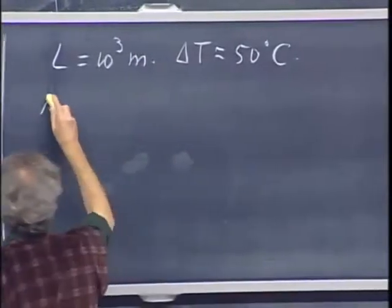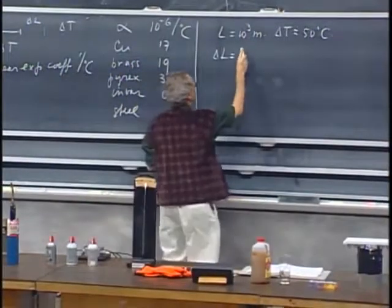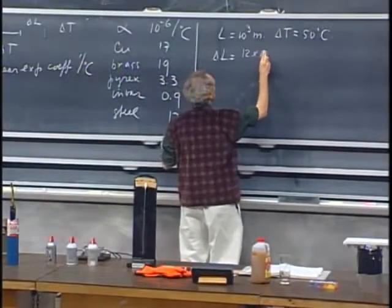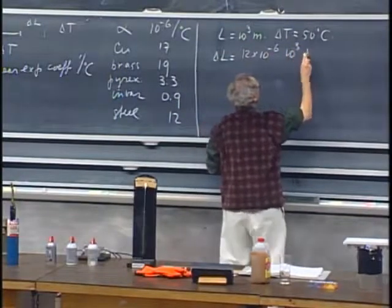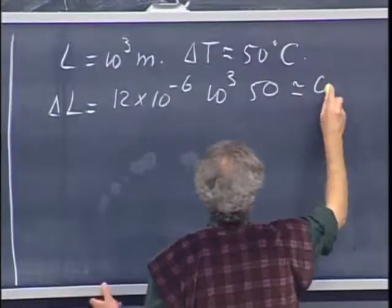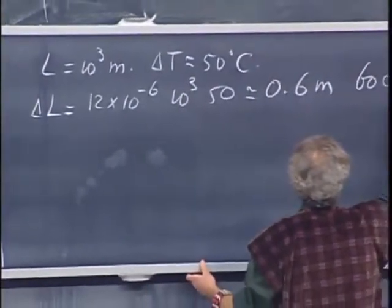So what is delta L? That would be 12 times 10 to the minus 6, times 10 to the third, times 50, and that is about 0.6 meters, which is about 60 centimeters.